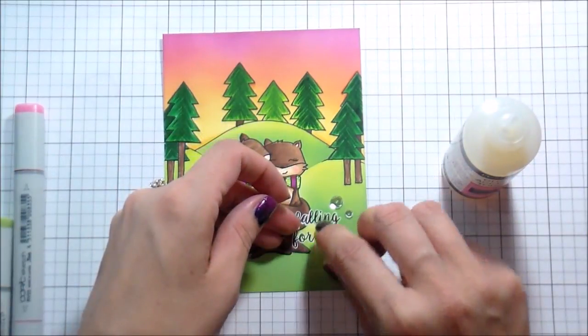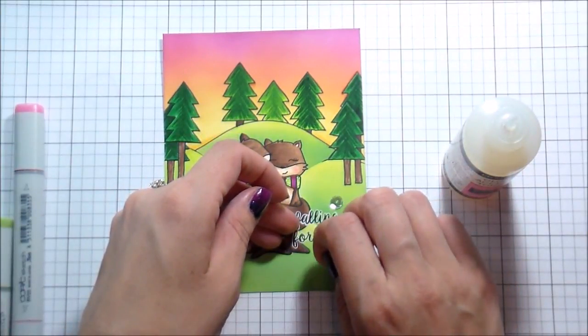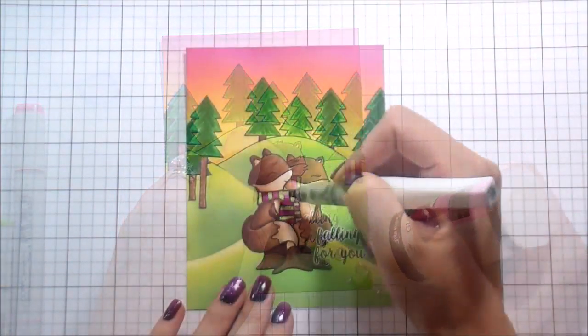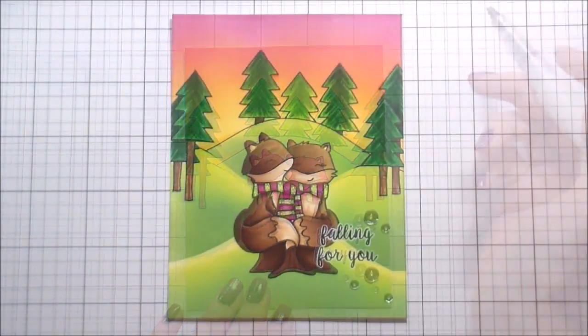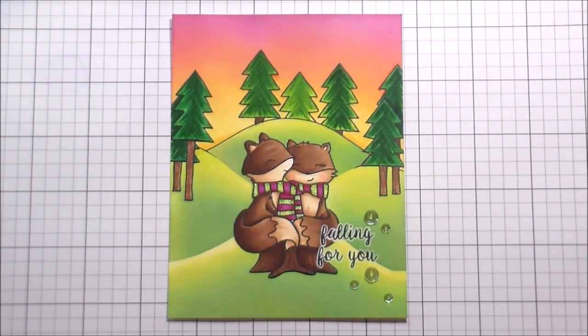Pulled out my clear sequin mix from Neat and Tangled, and then just used that to kind of accent the sentiment. And the last little bit of shimmer thing that I'm going to do is clear Wink of Stella on the reddish purple parts of the scarf.